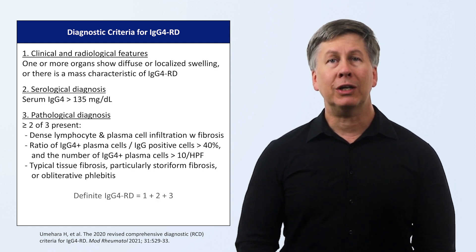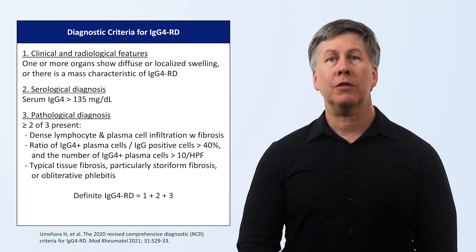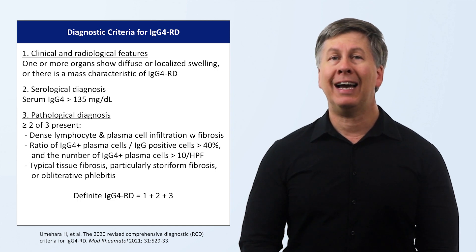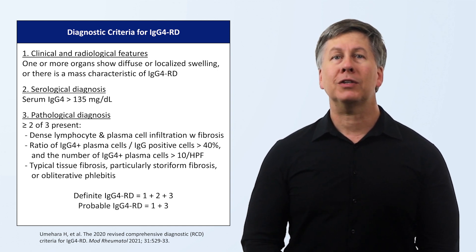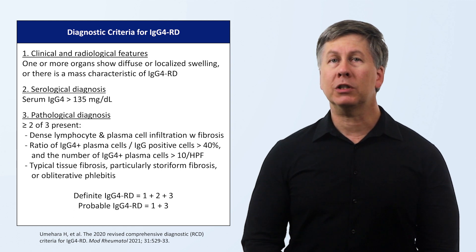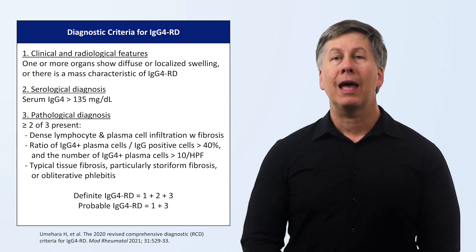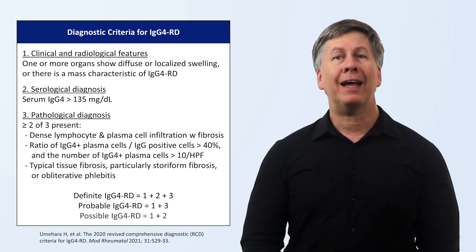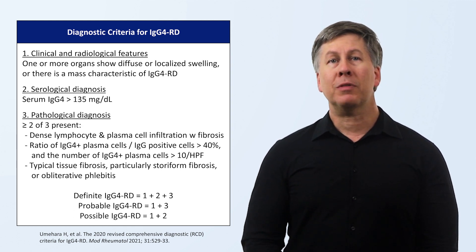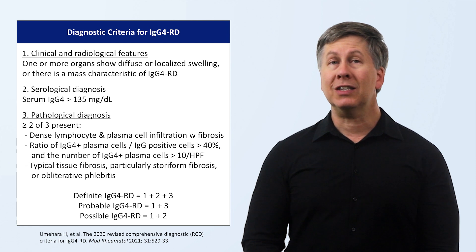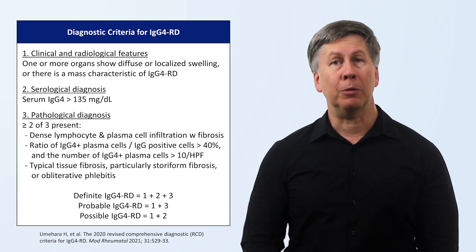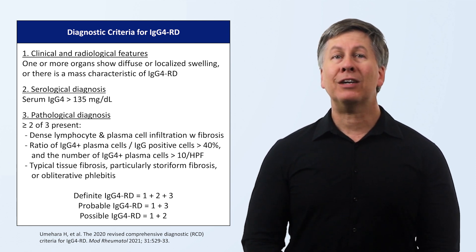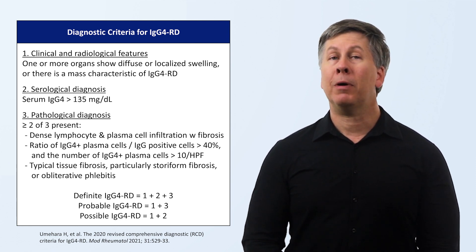If all three of these criteria are present, the patient is said to have definite IgG4-RD. If only criteria one and three are present, they are said to have probable disease. And if only one and two are present — either because the pathology is inconsistent or because a biopsy has not yet been performed — the diagnosis is said to be possible.